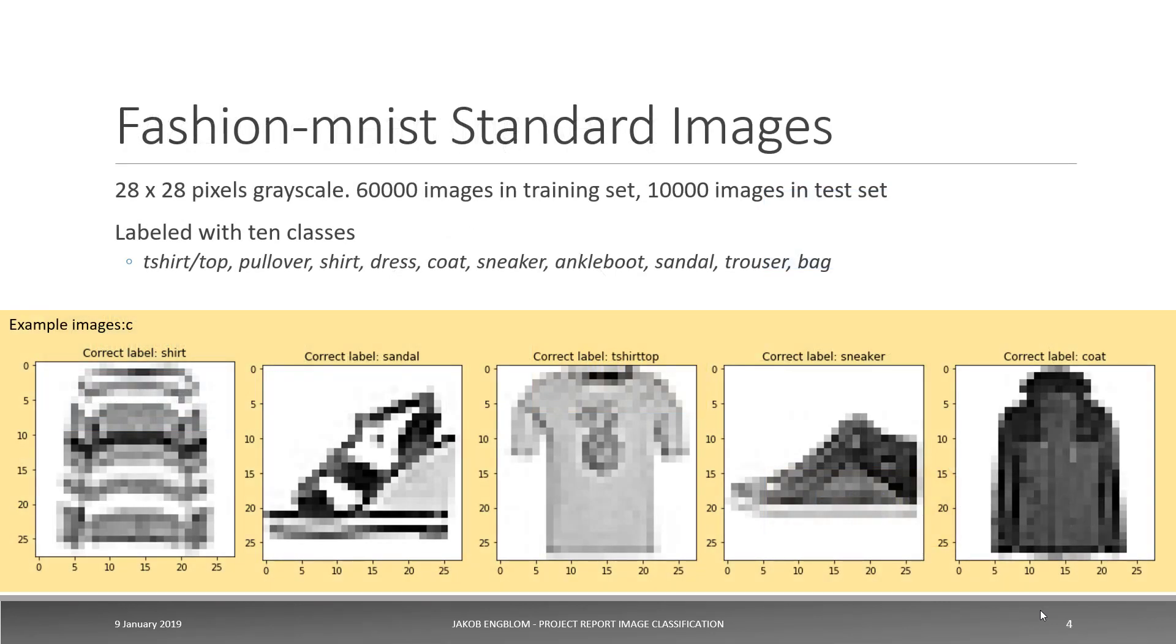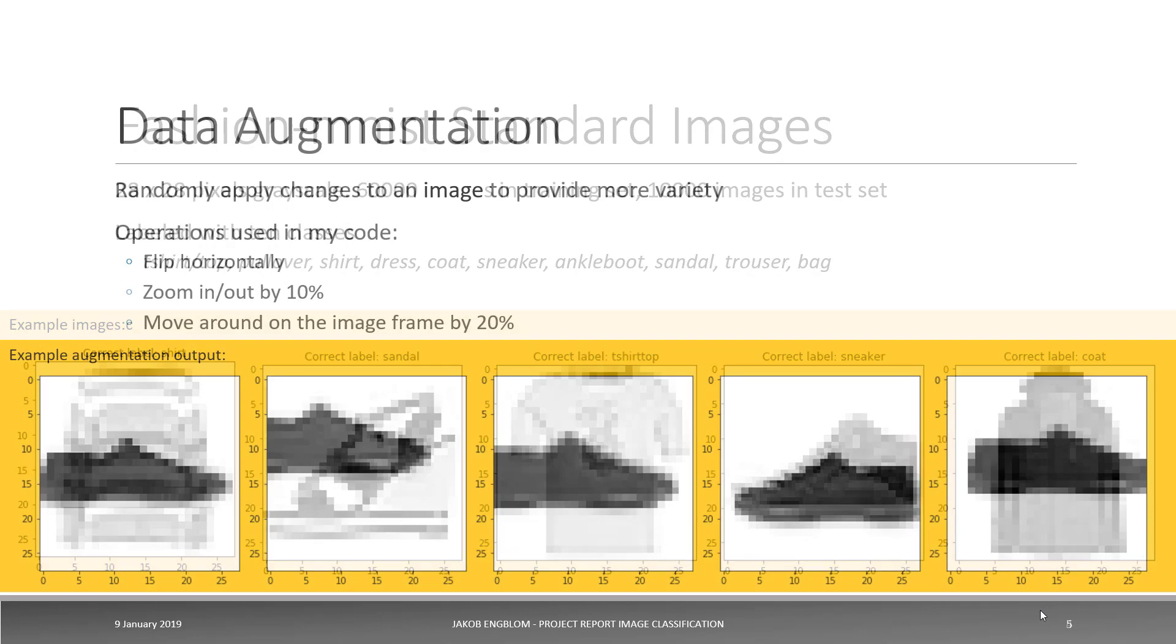The images in Fashion MNIST are 28 by 28 pixel grayscale. There are 60,000 images in the training set and 10,000 images in the test set. They're labeled using 10 classes and they all come from the Zalando online closed retailer website and it was put online by some of the researchers in 2017. So it's a nice, well-groomed test set for image recognition.